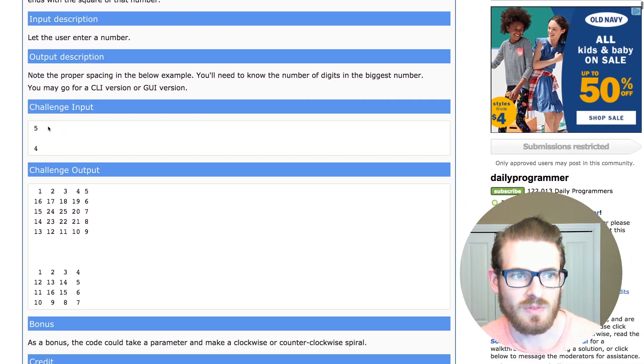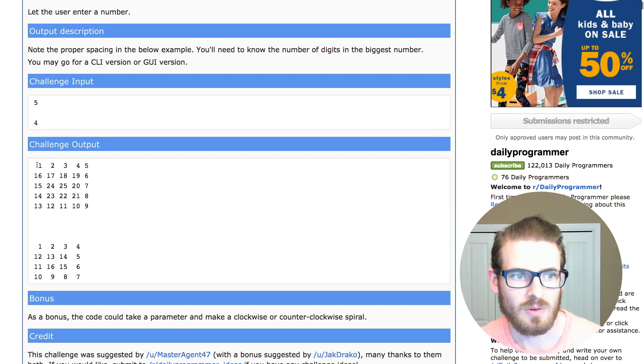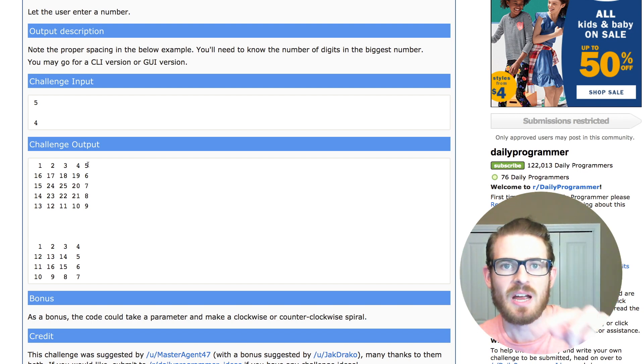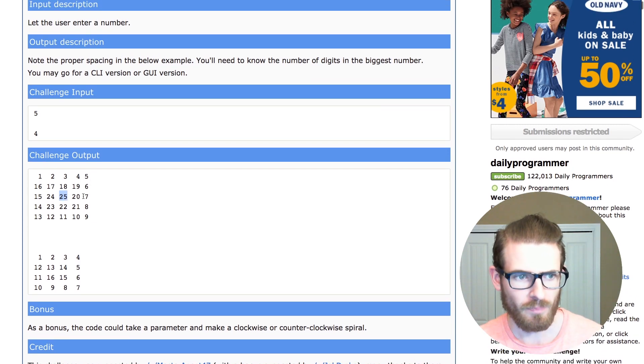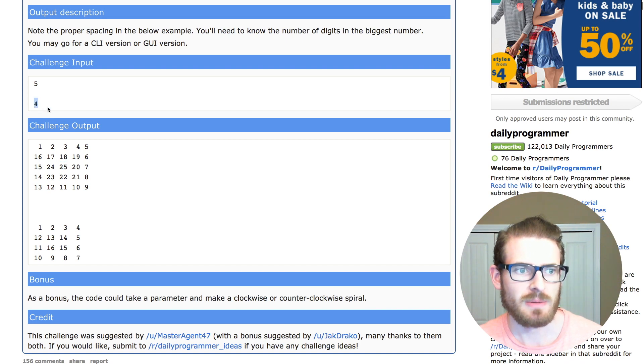Some examples they give you is a five, and if you see here, you have a 2D grid, or 2D array, where you have it going from one to five in the top row, and it just clockwise keeps counting up until you reach the last number, which is n times n, 25. And then again, another challenge input is four, where you just print out this grid down here.